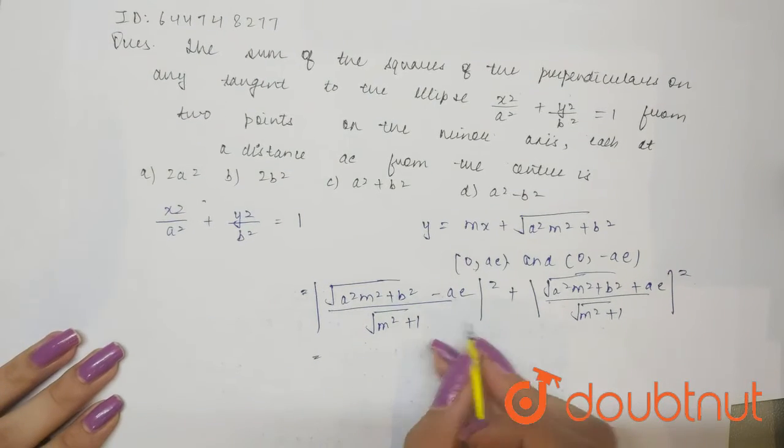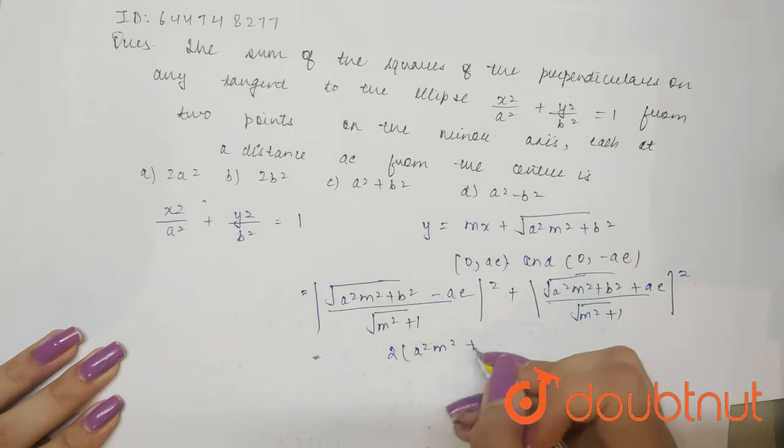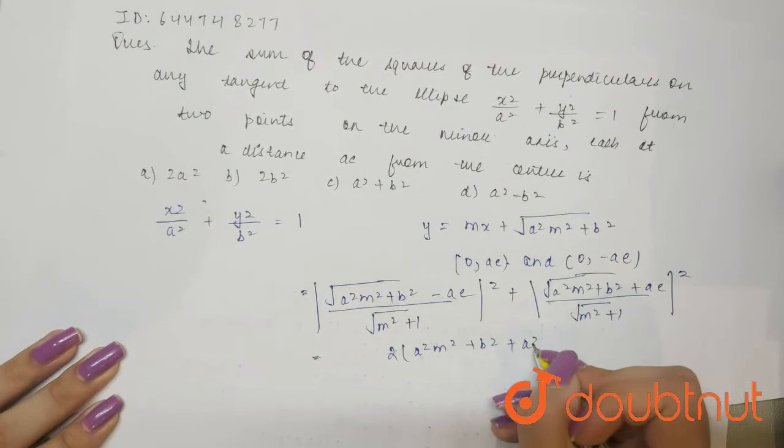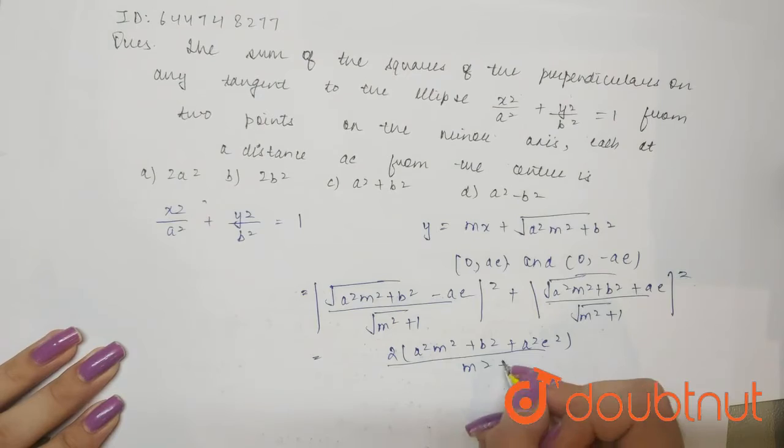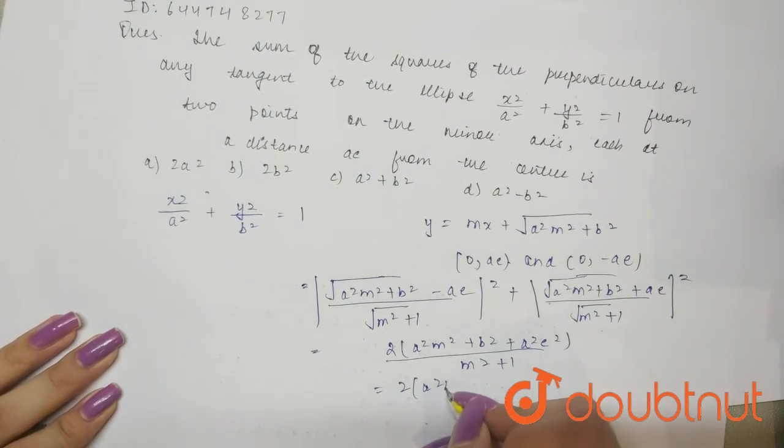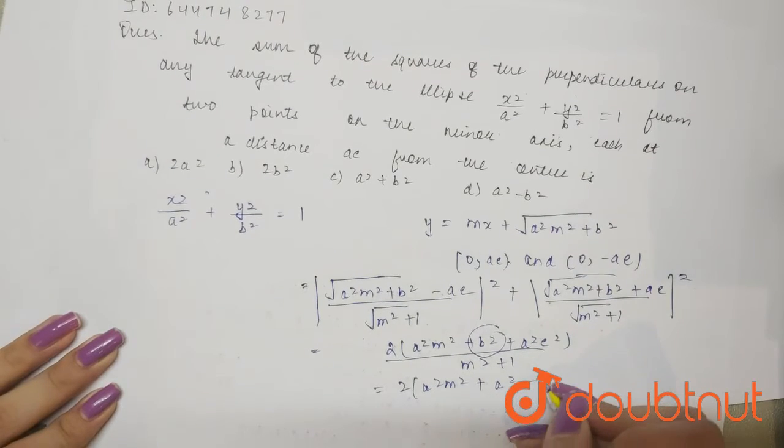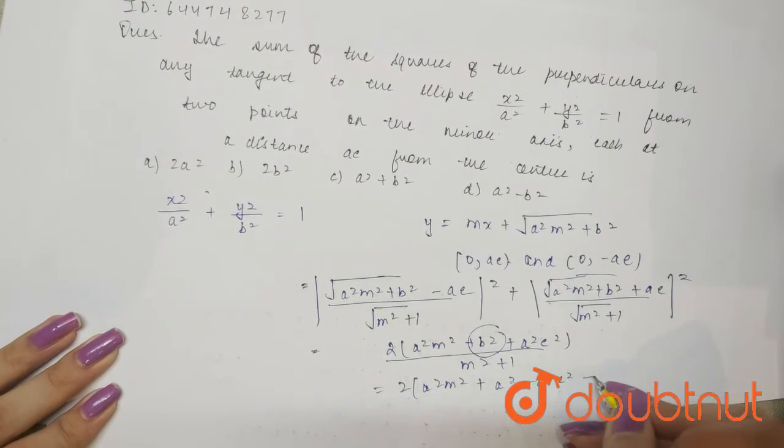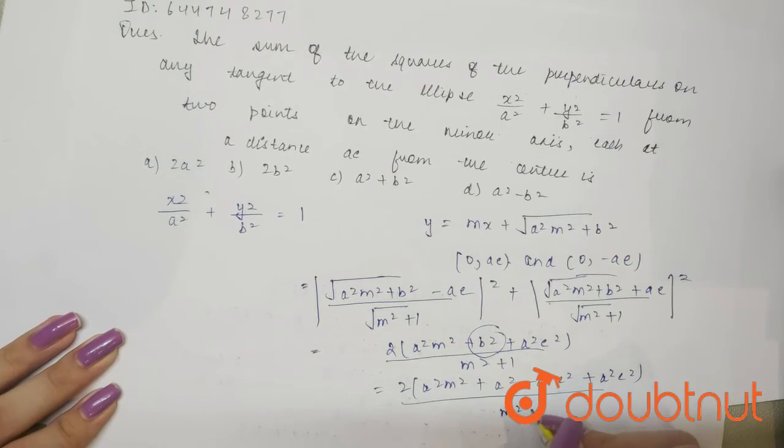So now if I solve this then I will get twice of a square m square plus b square plus a square e square divided by m square plus 1. Now this will be twice of a square m square plus I can also write b square as a square minus a square e square plus a square e square divided by m square plus 1.